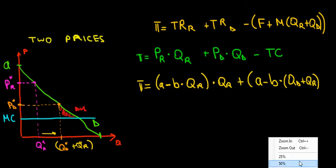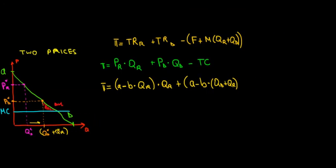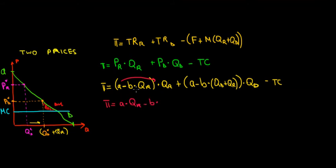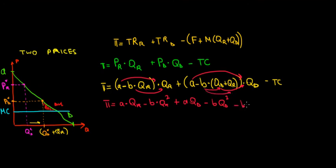Let me zoom out to make more space. We multiply the discount price expression (A minus B times (QD plus QR)) by QD, the quantity sold to discount customers, then subtract total cost. Expanding the brackets: A·QR minus B·QR², plus A·QD minus B·QD² minus B·QR·QD, minus B·QD, minus total cost. That gives us our full expanded profit function.